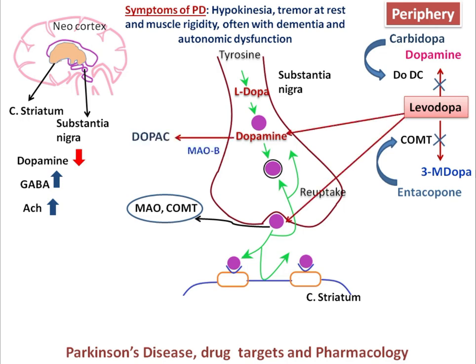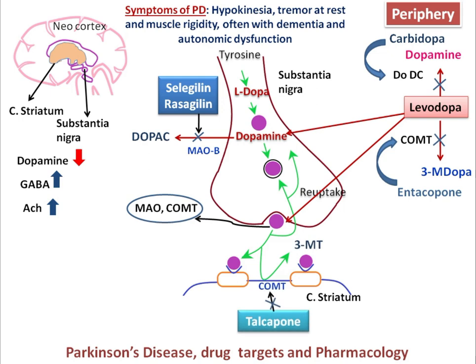When levodopa crosses the blood-brain barrier and acts centrally, it is converted into the dopamine neurotransmitter. Dopamine can then be converted into DOPAC with the help of MAO-B. MAO-B inhibitors block this conversion, with examples being selegiline and rasagiline, thereby increasing the concentration of dopamine in the substantia nigra and corpus striatum. Tolcapone acts both peripherally and centrally, inhibiting COMT enzyme so that dopamine is not converted into 3-MT, its metabolite, thereby improving PD symptoms.